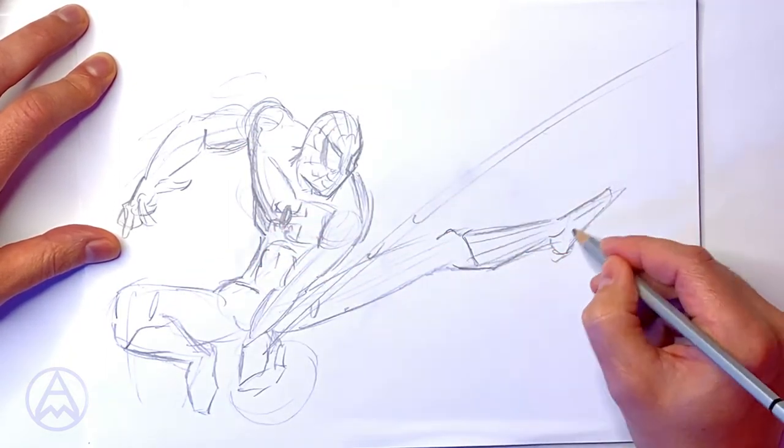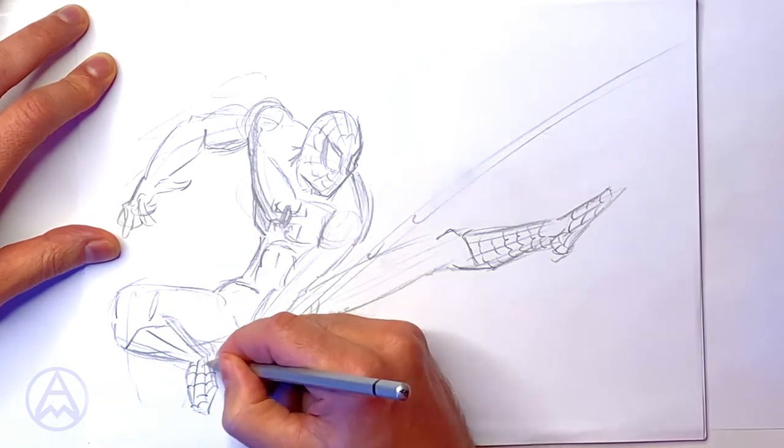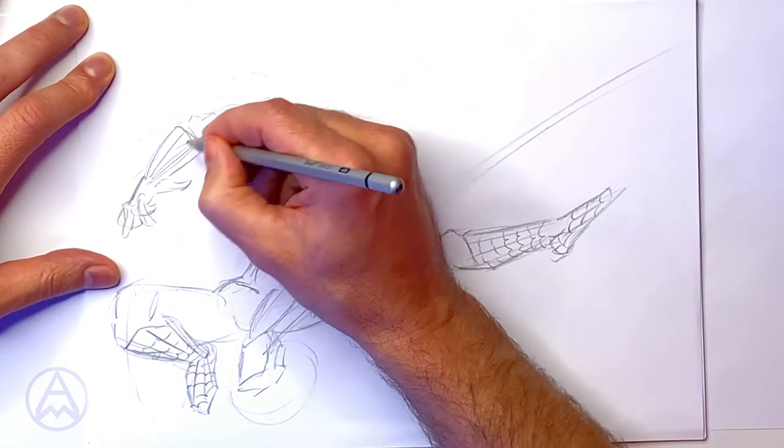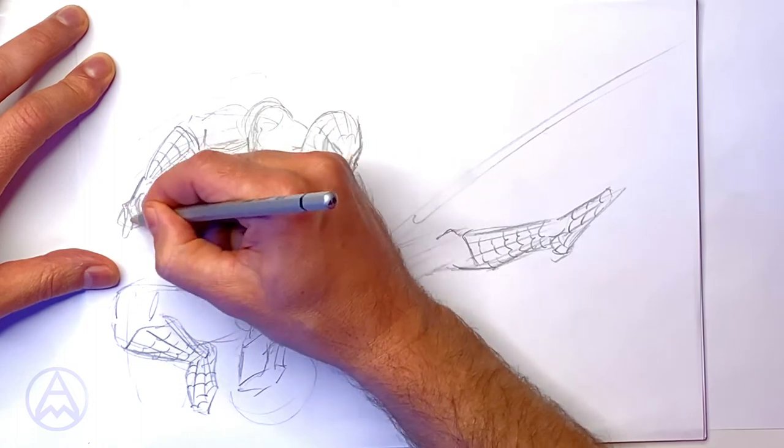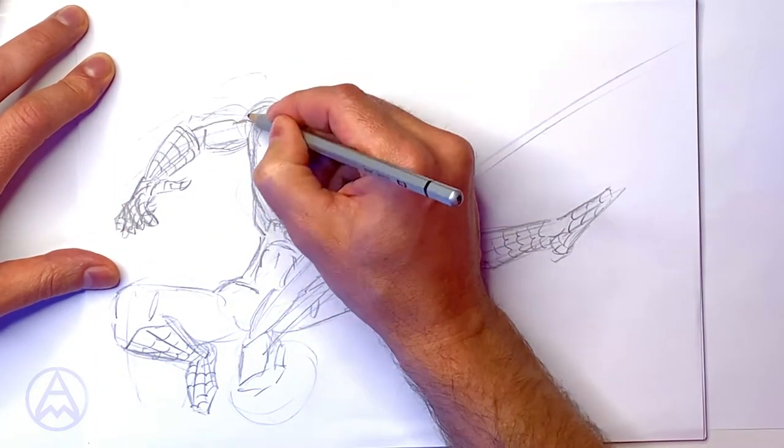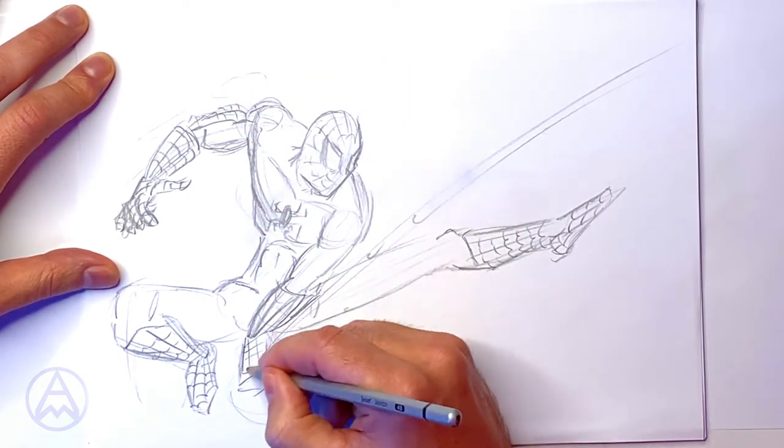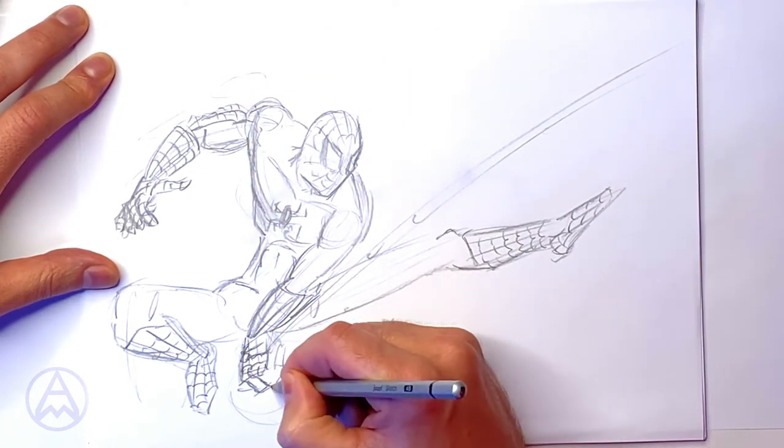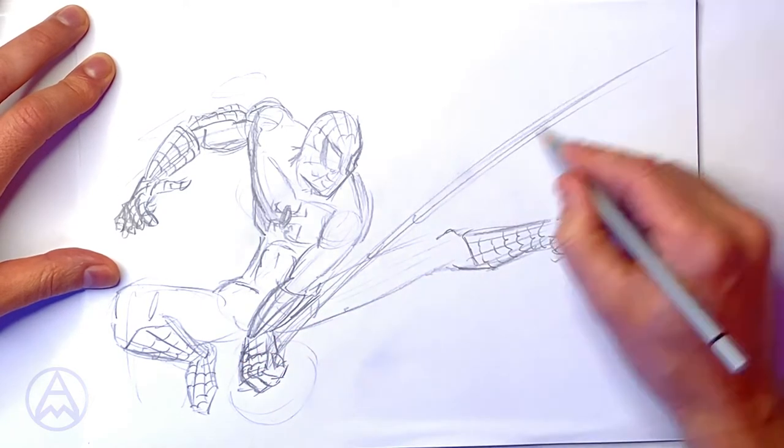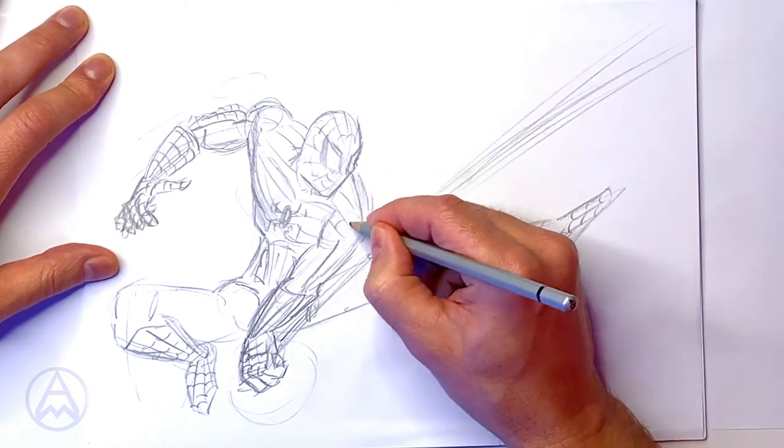Now I'm putting in my webs. I do that by putting in straight lines following the path of the body. And then I put my little curves in to indicate the web, just like that. Do it on that arm. Just defining some details there, put the web a bit. And then I started doing the chest, which I did sideways.